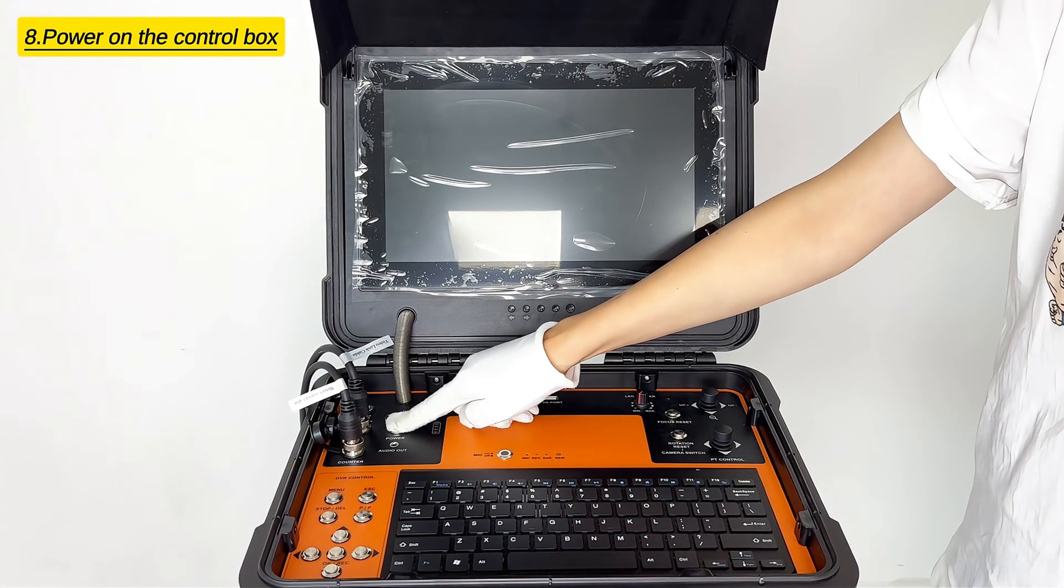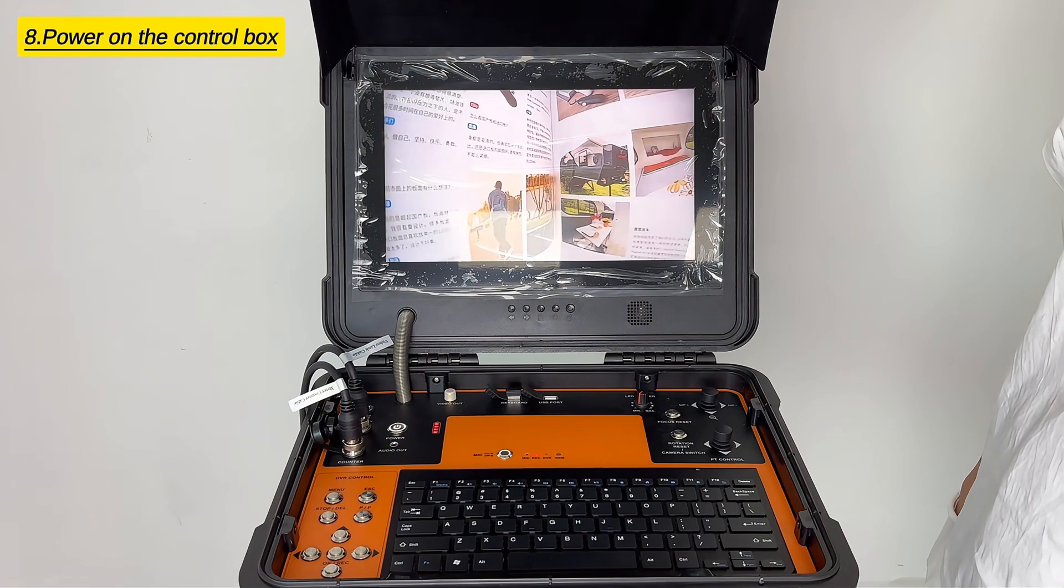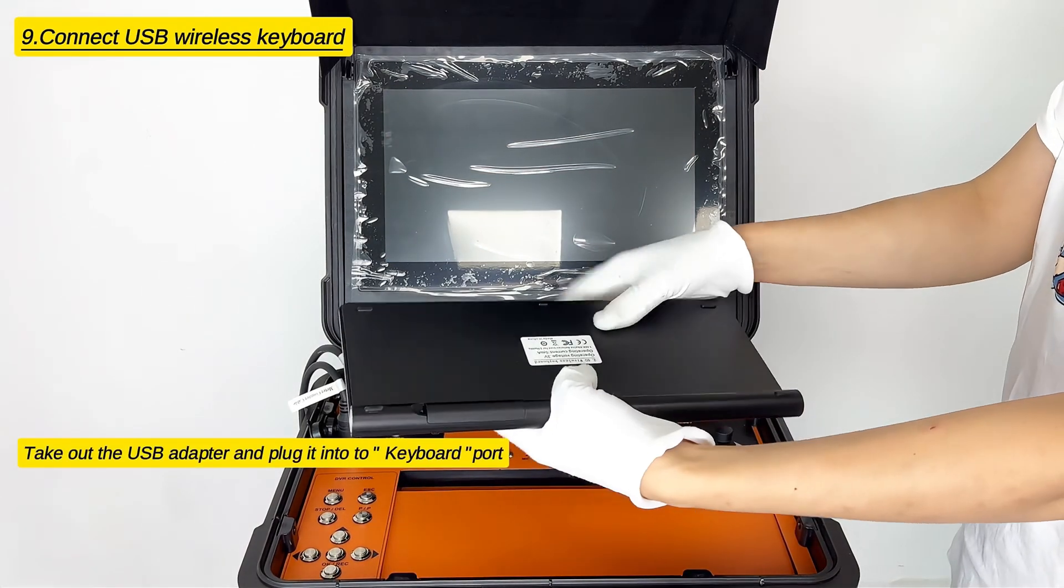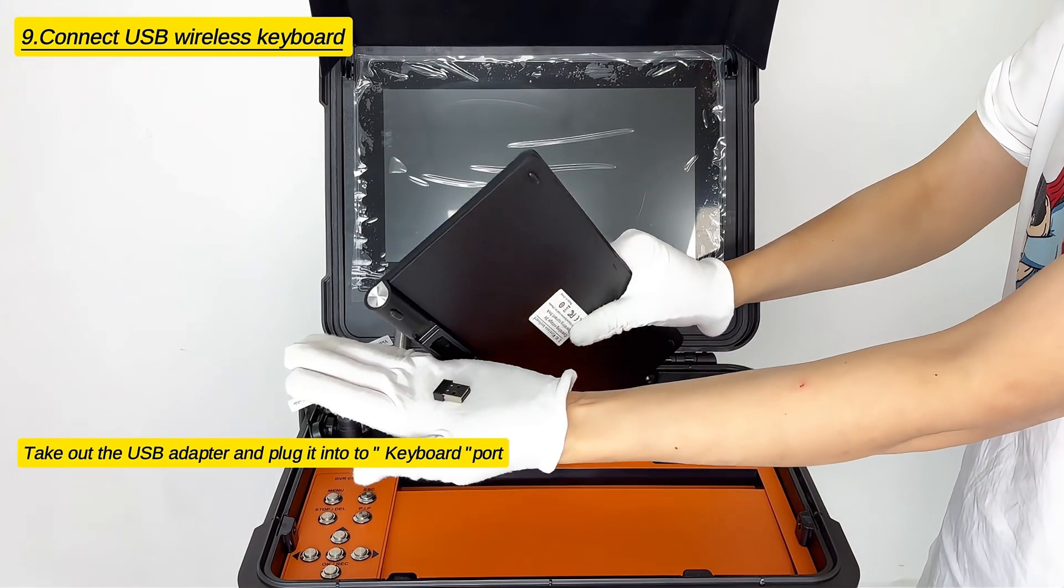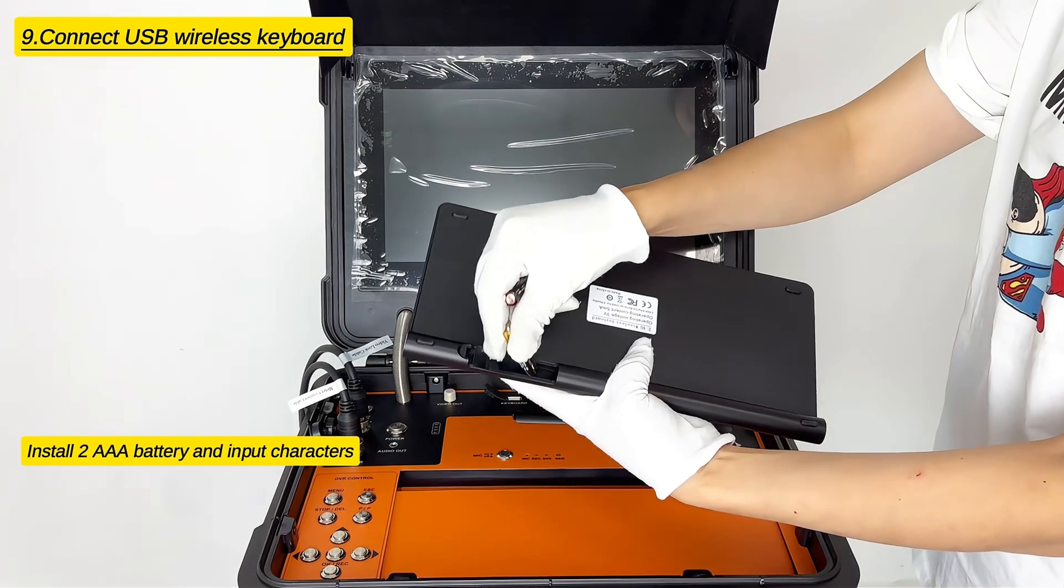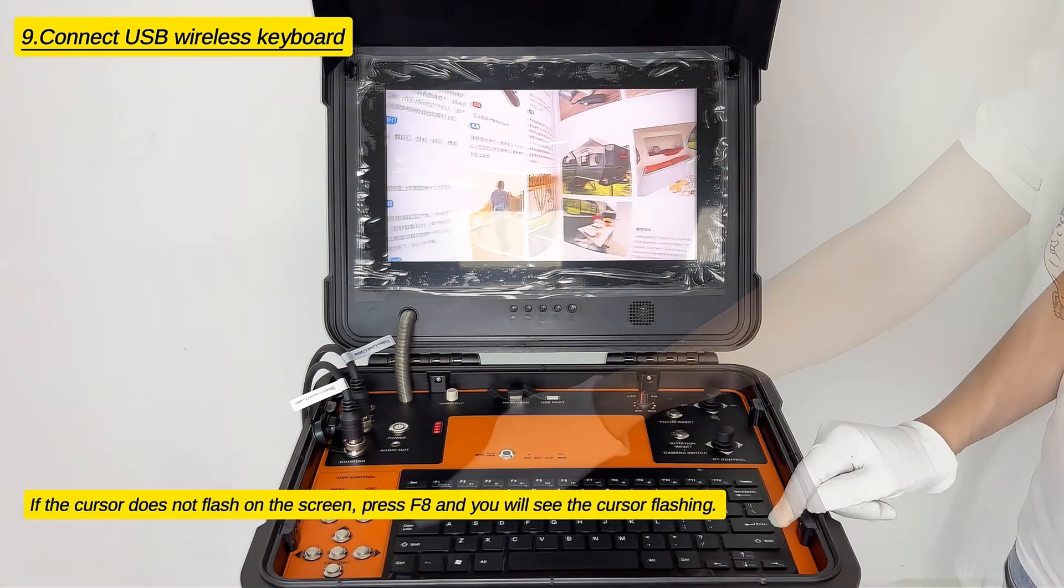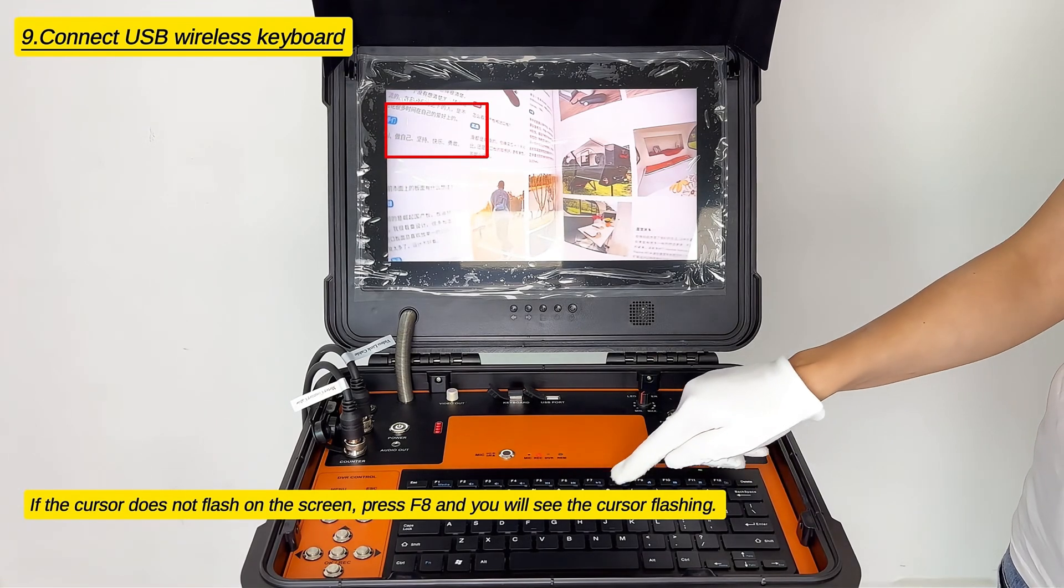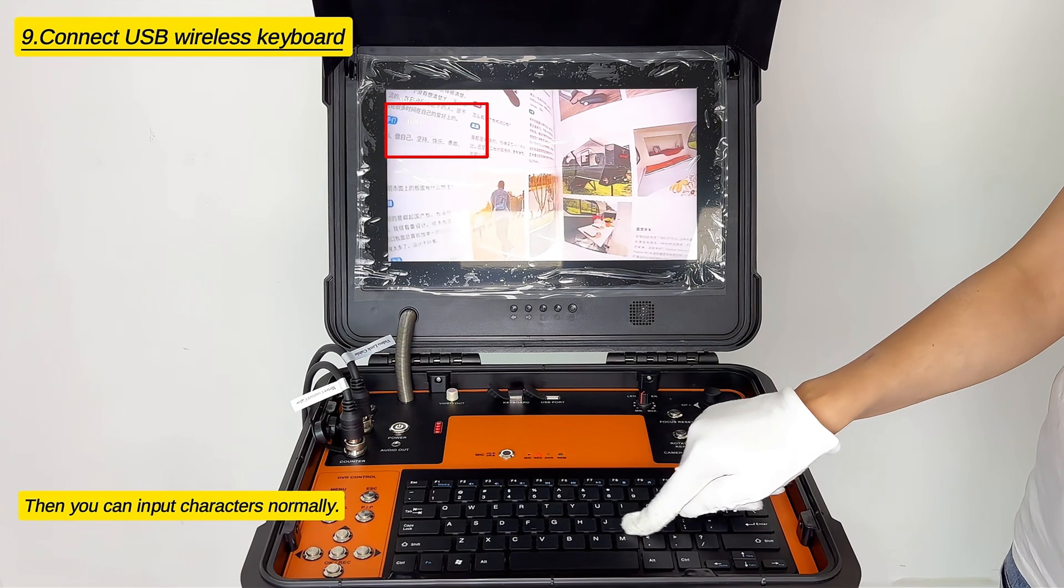Power on the control box. Take out the USB adapter and plug it into the keyboard port. Install two AAA batteries and input characters. If the cursor does not flash on the screen, press F8 and you will see the cursor flashing, then you can input characters normally.